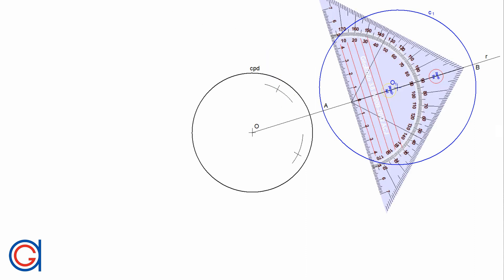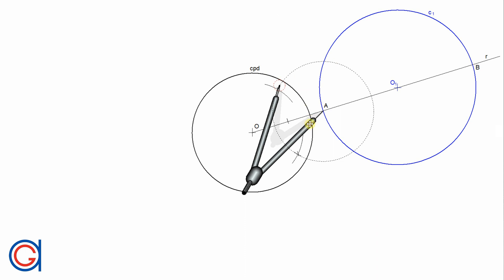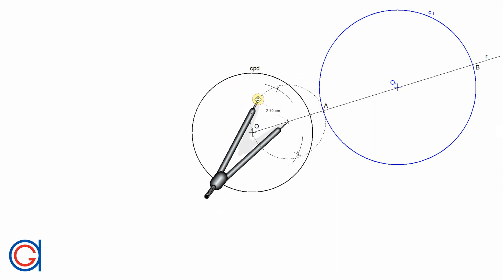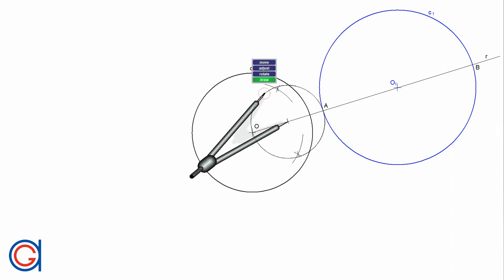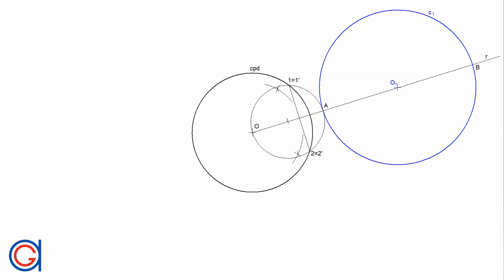Now we draw a line joining these two intersections, which is the perpendicular bisector, and where this line cuts the line segment OA we obtain the midpoint. Setting the compass on this midpoint with radius midpoint-to-O, we draw a circle which cuts the reference circle at two points — point one and point two. Joining points one and two, where this line cuts the line OA we obtain the new point A prime, which is the inverse point of point A.